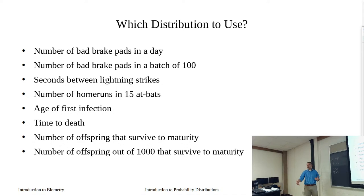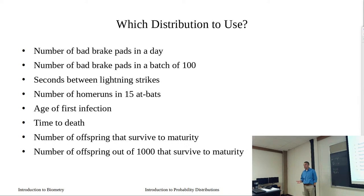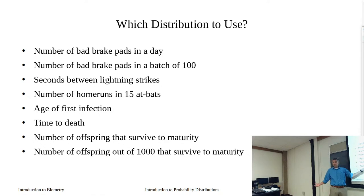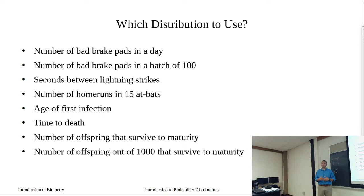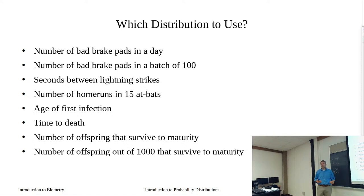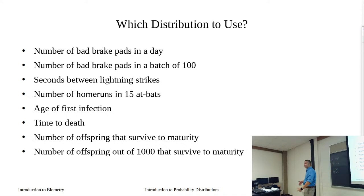If we said every day we produce 10,000 brake pads, and then asked how many bad brake pads do we have that day — well, that's out of 10,000. But in this example we don't ever say how many brake pads come off the line. An equivalent is beer bottling lines or canning lines. You can say we produce X number of bottles per day, but you don't know that exactly — a can gets stuck, slows things down. So this first one is definitely Poisson. The second one is binomial — we do have an out-of number: how many bad brake pads out of 100.